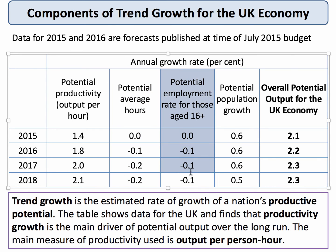The other way that you can get aggregate supply to shift out is by getting more people in work — the percentage of the population aged above 16 who are in work. But that's not really changing very much. The employment rate is fairly high already, and getting more people into work is pretty tricky. Childcare policies, minimum wages, and living wages can have an effect at the margins, but it's not the most important thing.